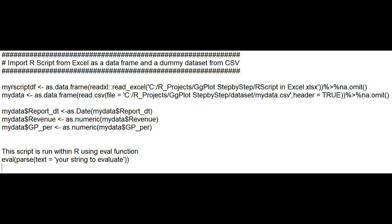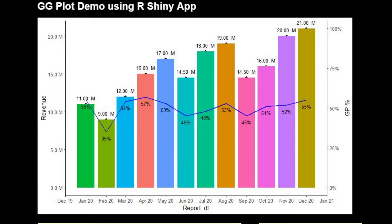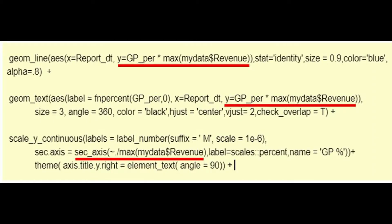The script is run within R using an evaluation function, with specific reference to the secondary axis on the right side of the plot. Revenue is in millions and gross profit percentage is in decimal. So to match and align the gross profit line on the plot, you need to multiply the percentage by the maximum of revenue. And when it comes to labeling, you divide the calculation by the maximum of revenue to reflect the percentage.